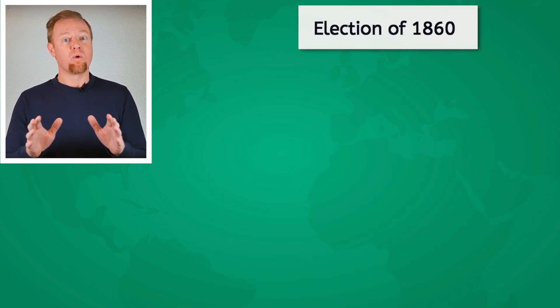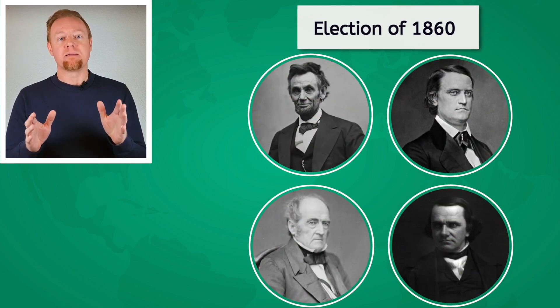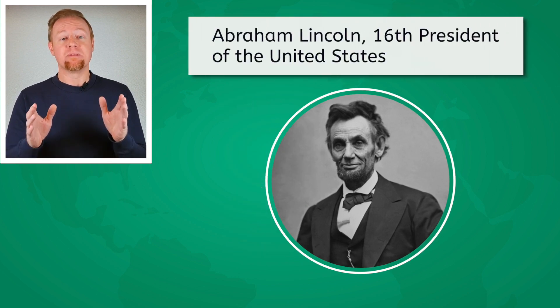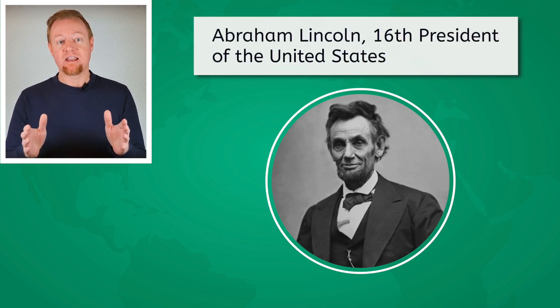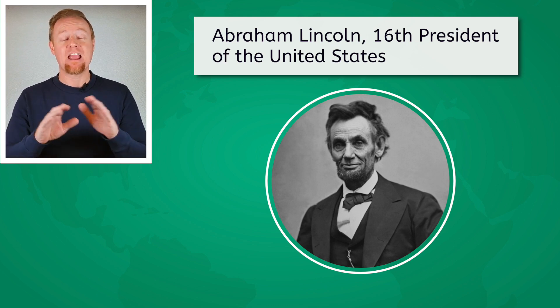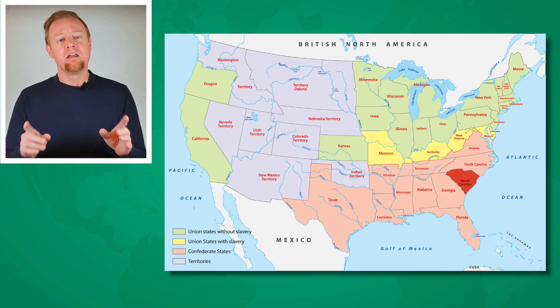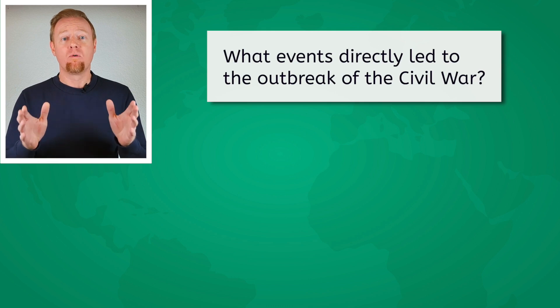The election of 1860 was a fraught affair with four presidential candidates. An Illinois legislator named Abraham Lincoln won and became the 16th president of the United States. As Lincoln ran on a platform of curtailing new slave states, the South feared that this would be the end of the institution once and for all. On December 20th of 1860, just a month after the election, South Carolina seceded from the United States. What events directly led to the outbreak of the Civil War?